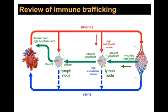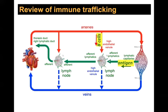Coming back to the general scheme: antigen enters the lymph node through the afferent lymphatics — it's coming from the periphery, draining from sites of infection into lymphatic capillaries and being brought to the lymph node. B cells enter via the high endothelial venules, not through the afferent lymphatics. They cross each other's paths, which maximizes the chance that B cells and antigen will meet up in the lymph node.